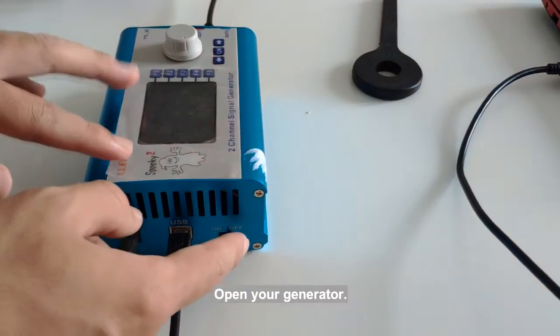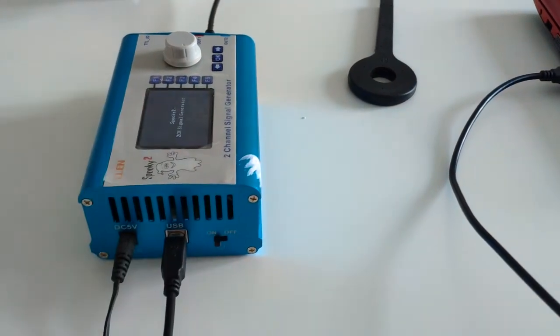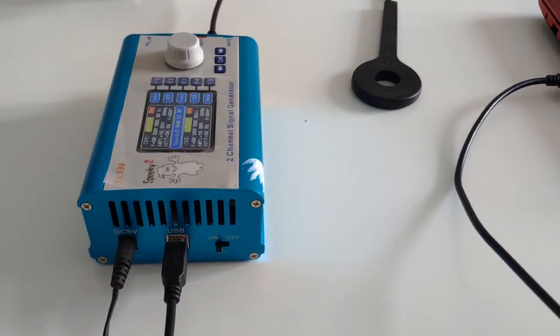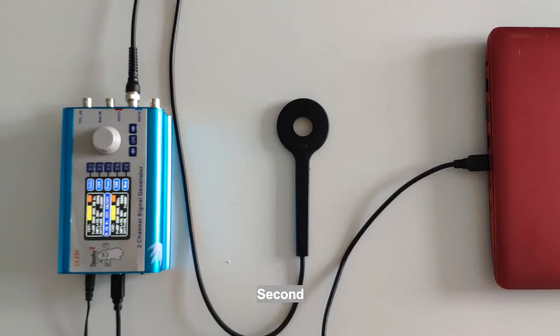Open your generator. Second, put the liquid you want to imprint on the PEMF coil.